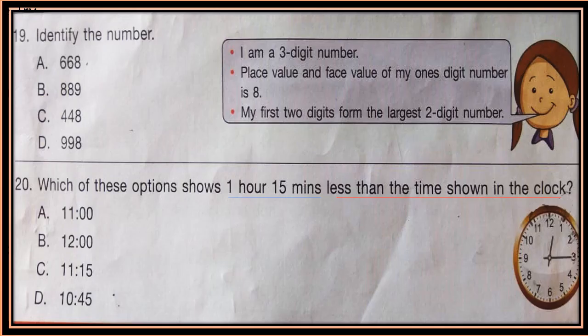Question 19: Identify the number. I am a 3-digit number. The place value and face value of my 1's digit is 8. My first 2 digits form the largest 2-digit number. Three conditions are given — see options A, B, C, D. Which is the largest 2-digit number? Choose accordingly.